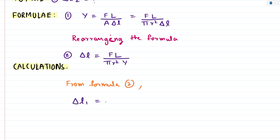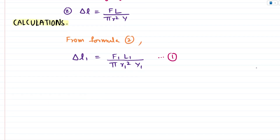For the first wire, delta L1 equals F1 times L1 divided by pi R1 squared times Y1 — call this equation 1. Similarly, for wire 2, delta L2 equals F2 times L2 divided by pi R2 squared times Y2 — call this equation 2.